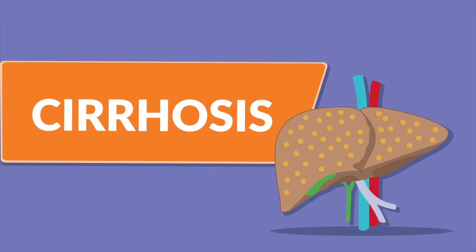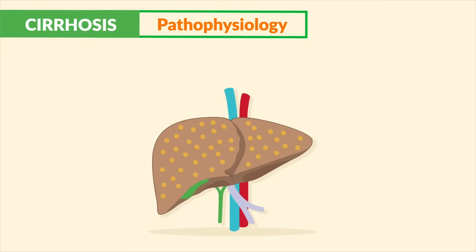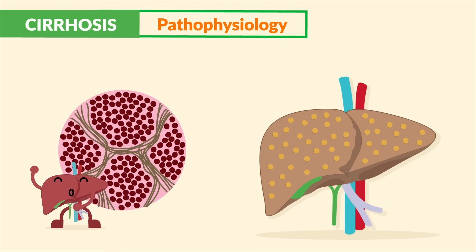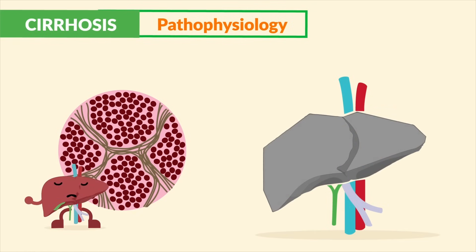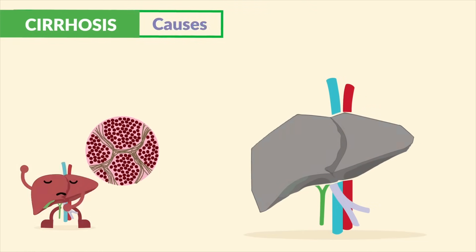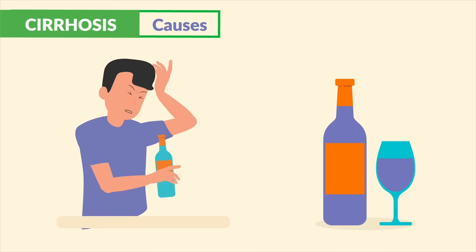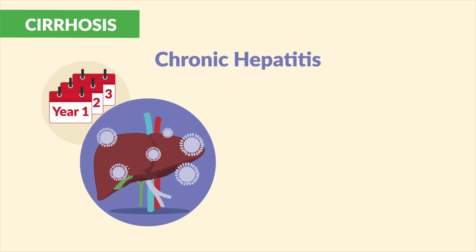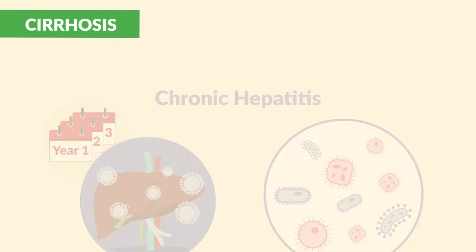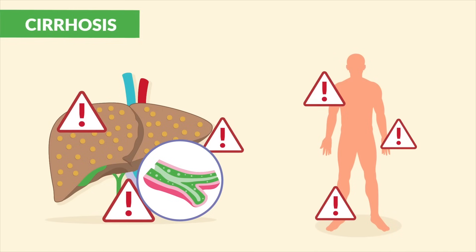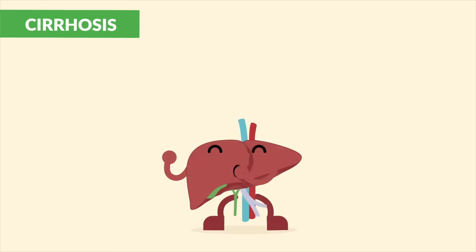For cirrhosis, the pathophysiology is simple — just think 'scar-rosis.' In liver cirrhosis, normal healthy tissue gets replaced with scar tissue, making the liver hard like a rock. Causes include alcohol abuse, which can scar the liver; chronic hepatitis with inflammation; and cystic fibrosis, where serious mucus can build up and clog the entire body, including the liver.